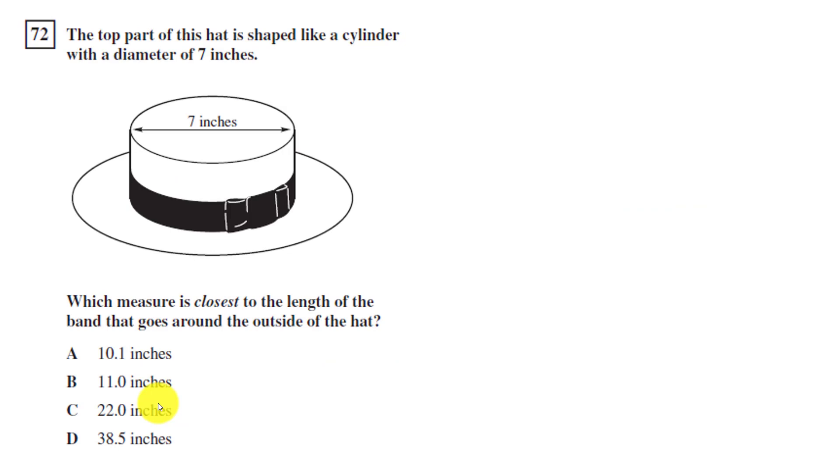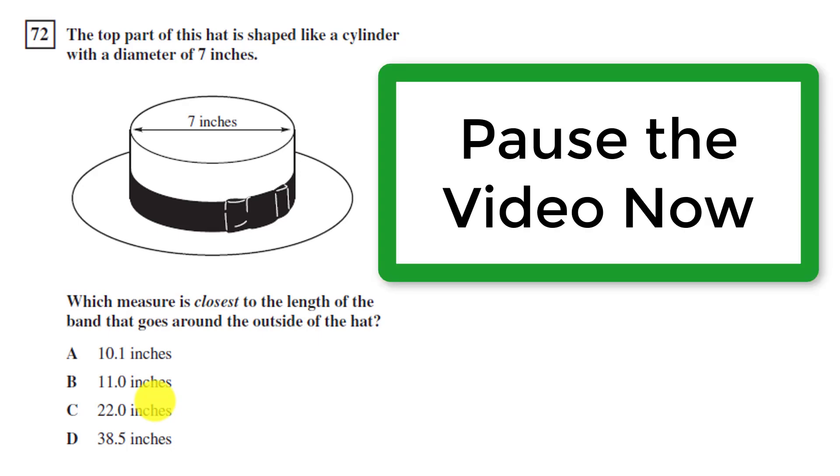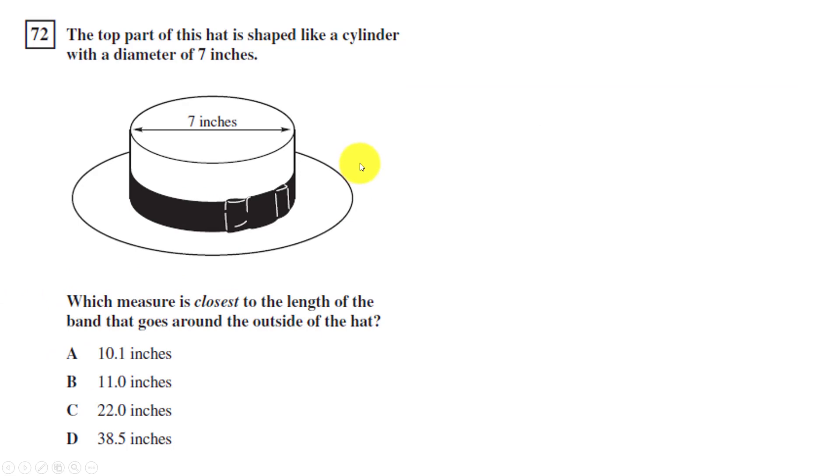This question's another application of knowing about circles, circumference, and area. Read it to yourself. Pause the video and try the question on your own. The top part of this hat is shaped like a cylinder with a diameter of 7 inches. Remember, I highlight that important information. Which measure is closest to the length of the band that goes around the outside of the hat? So we're talking about this band and it's going around the outside of the hat. So what are we talking about here? Are we talking about area or are we talking about circumference? Are we talking about something different altogether?